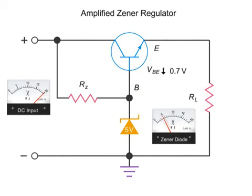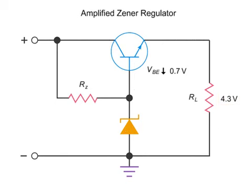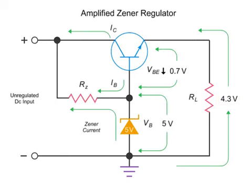Keeping in mind the rule of 0.7, we can determine that the output voltage at the emitter will be 0.7 volts less than the voltage at the base, or 4.3 volts. Therefore, the voltage level at the RL load resistor will also be 4.3 volts. This variance in voltage levels facilitates the flow of current through the circuit.